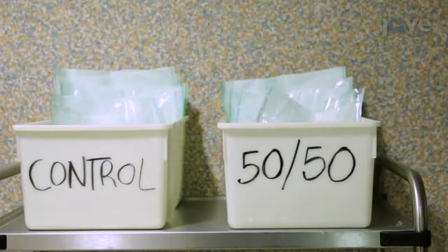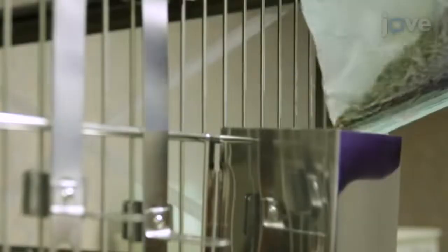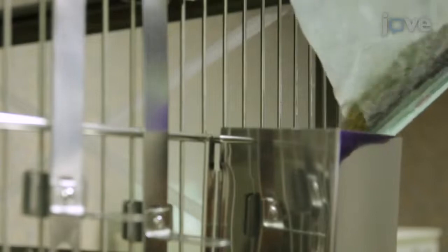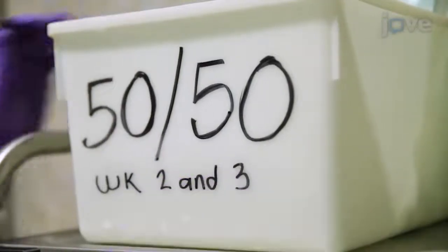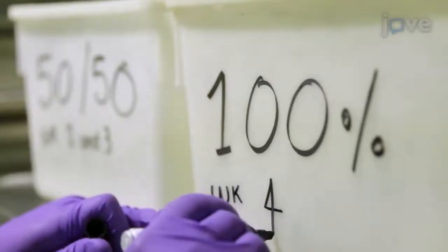Feed the animals in the Met S group 250 grams of chow starting with 50% control and 50% high-fat chow. Then, progressively increase the diet to 100% high-fat chow by the end of week four.